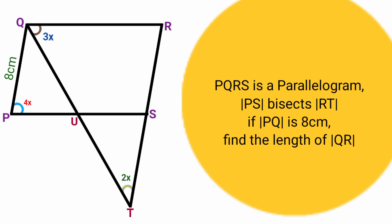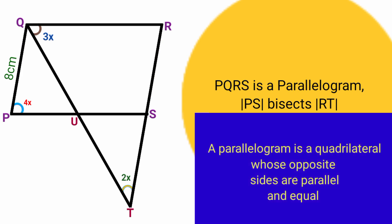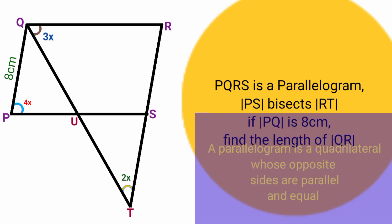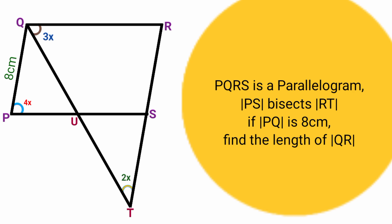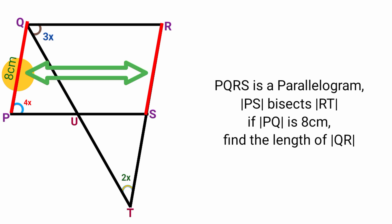The first data we are given is that PQRS is a parallelogram. A parallelogram is a quadrilateral in which opposite sides are parallel and equal. This implies that this line here is equal to this line because they are opposite to each other, and hence line RS also equals 8 centimeters.